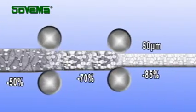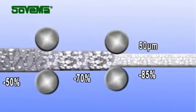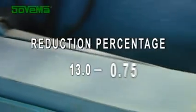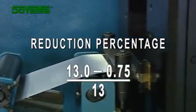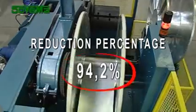Solvema suggests you start with a strip of this kind for the production of the grids in order to ensure optimum performance. This can be achieved using Solvema's strip production line, which offers a variation in thickness from 13 millimeters up to 0.75 millimeters, thus obtaining the following reduction percentage equals 94.2%.